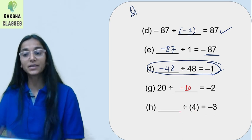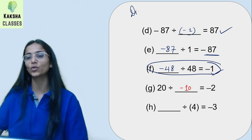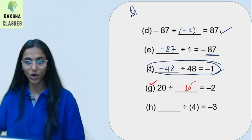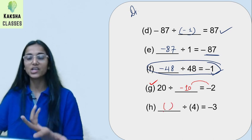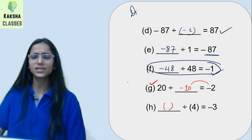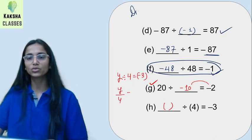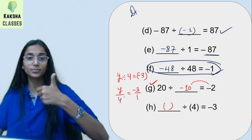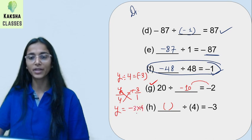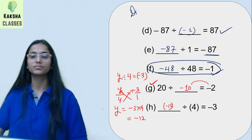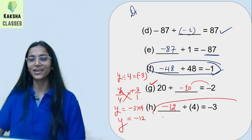This last one is really interesting. Here is a trick: if you need to find the divisor, find the product of the quotient and dividend — that gives you the divisor. We have some integer y divided by 4 that gives quotient minus 3. So y upon 4 equals to minus 3 upon 1. Cross multiply: y equals minus 3 times 4, which is minus 12. So write minus 12 here — and that is completely done.